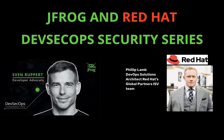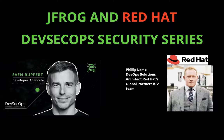Welcome to today's joint Red Hat and JFrog discussion on DevSecOps. My name is Philip Lam, and I am the Senior DevOps Solutions Architect for Red Hat's Global Partners and Alliances ISV team. Prior to joining Red Hat, I was a developer for more than 15 years, most recently specializing in assisting with the digital transformation of the state of North Carolina's Department of Information Technology. I'm joined today by JFrog's Sven Ruppert, who's a developer advocate and DevSecOps extraordinaire. Sven, would you like to introduce yourself?